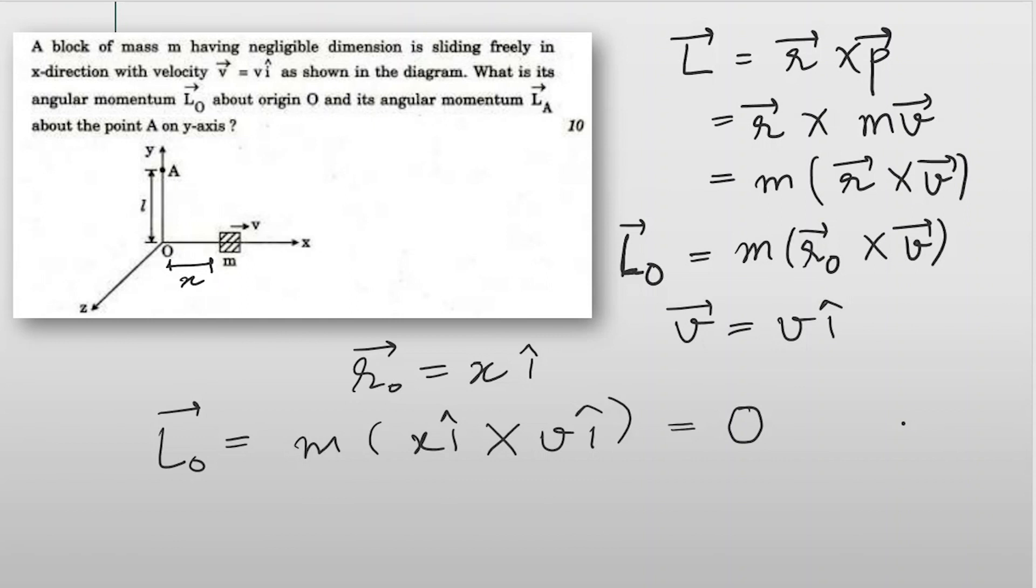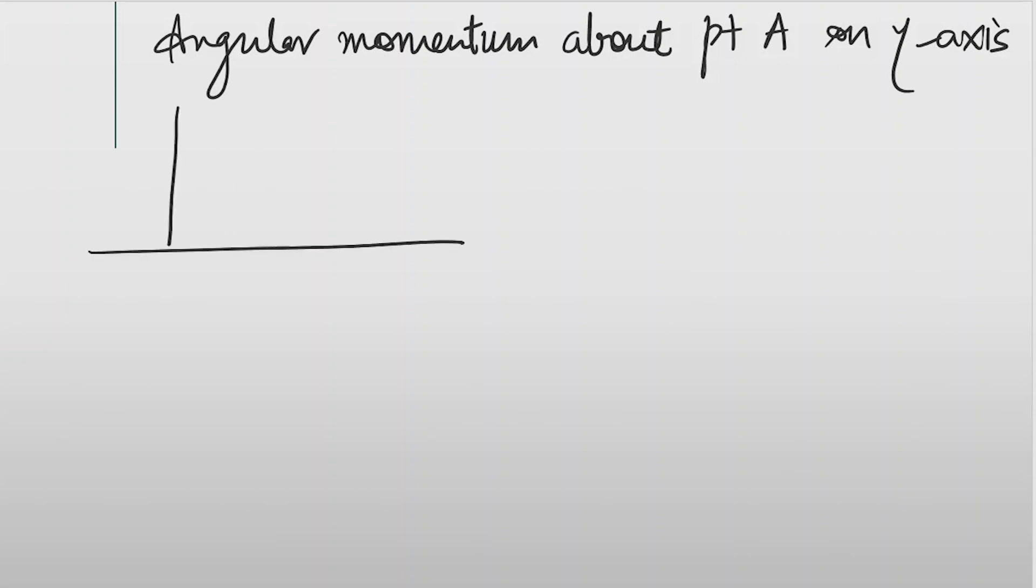Let's find out the angular momentum about point A on the y-axis. We are given this case: this is y, this is x, this is z. We are having a block of mass m here. We are given this point, this point, this is origin.